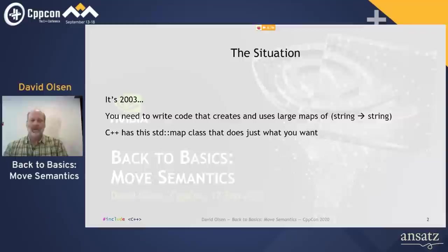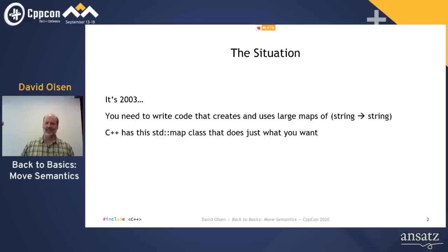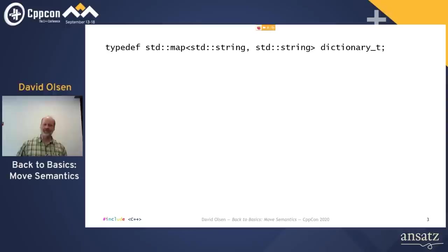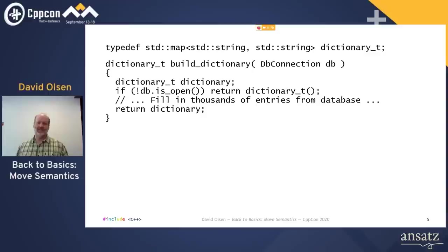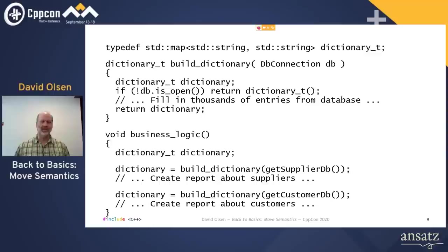Let's go back a bunch of years to the early aughts. You are writing an application in C++, and you need to do a lot of lookups where both the key and the value are strings. You notice that the map class in the standard library does exactly what you want. So you start by creating a typedef for the exact map type you want, a map from string to string named dictionary_t. Then you write a function that fills in the dictionary using information extracted from a database. Because std::map is a value type that can be safely copied, your function returns the dictionary by value. Next, you write the code that uses the dictionary. You need a couple different dictionaries, but you don't need them at the same time, so you have one dictionary variable that gets assigned different values in various places in the business logic function.